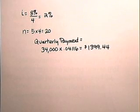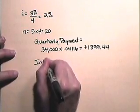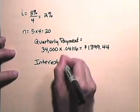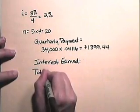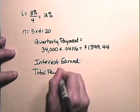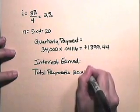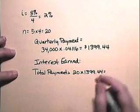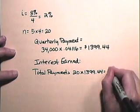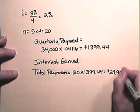Now let's determine the interest that will be earned on the account. We first need to find the total payments, which will be 20 payments times $1,399.44. So the total payments amount to $27,988.80.